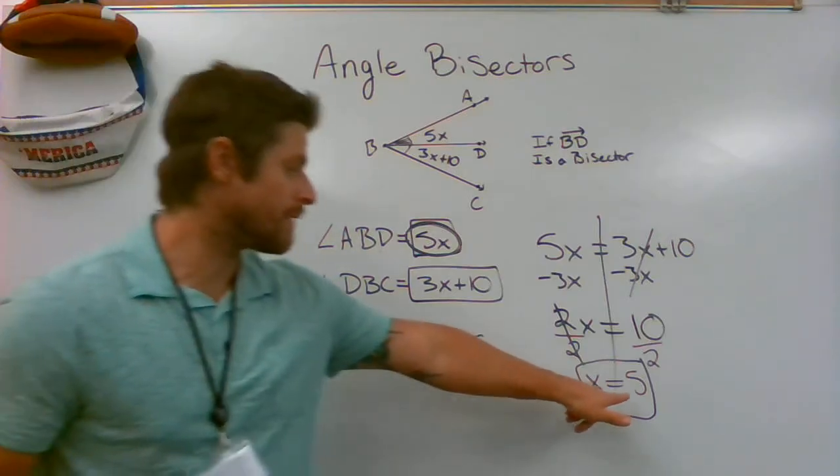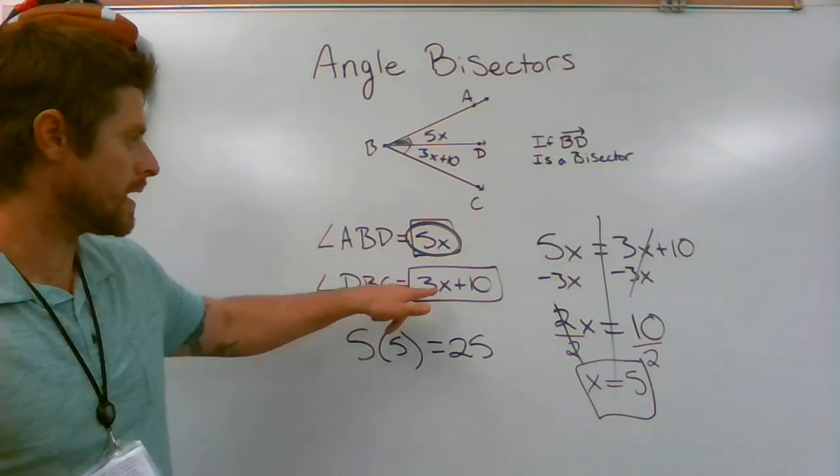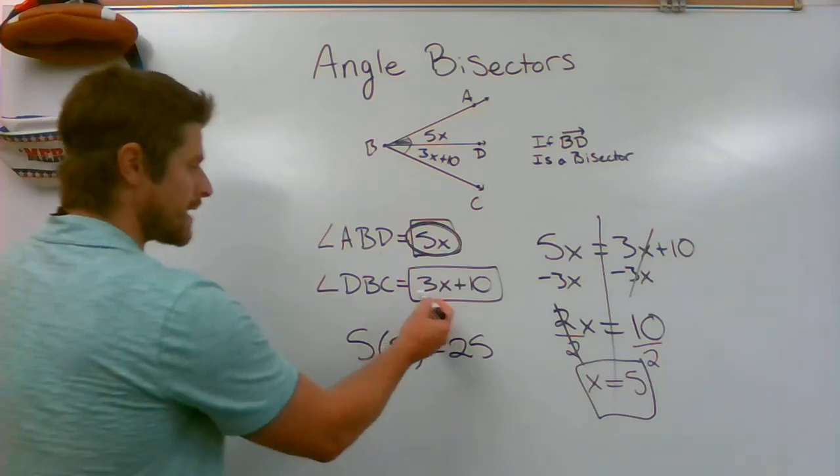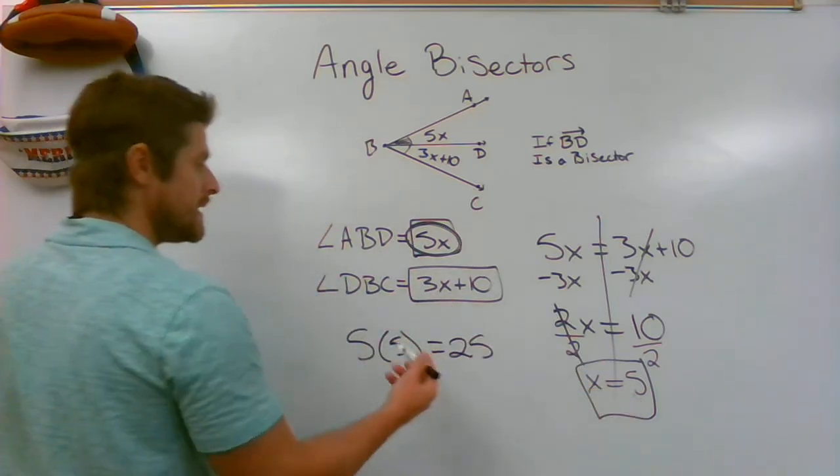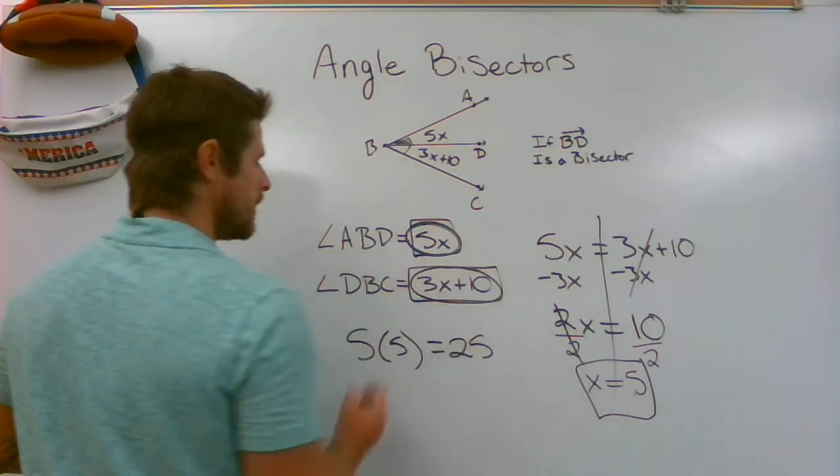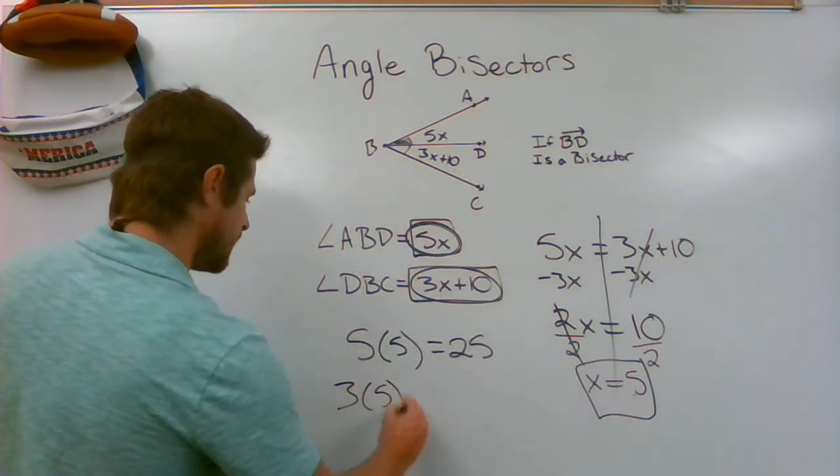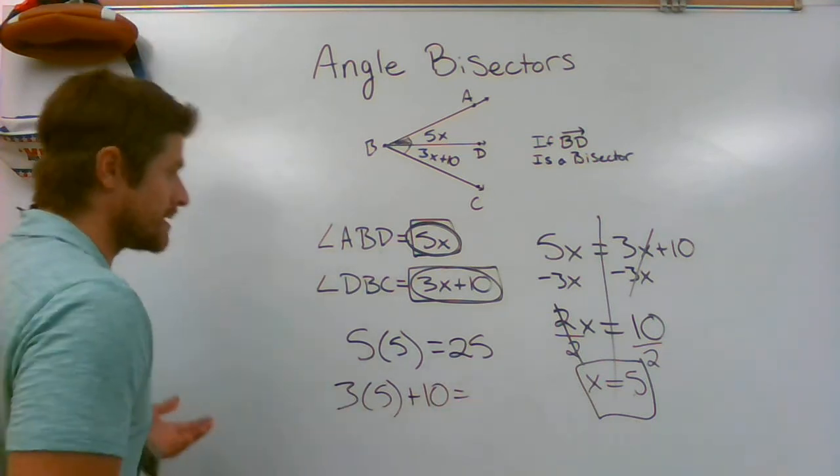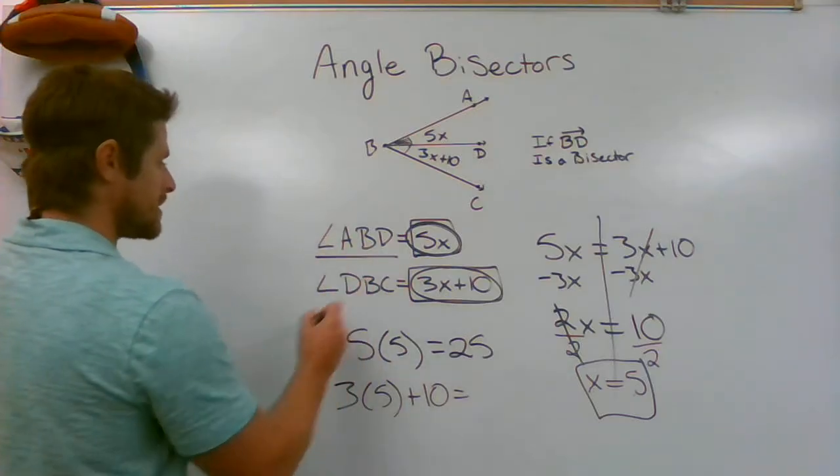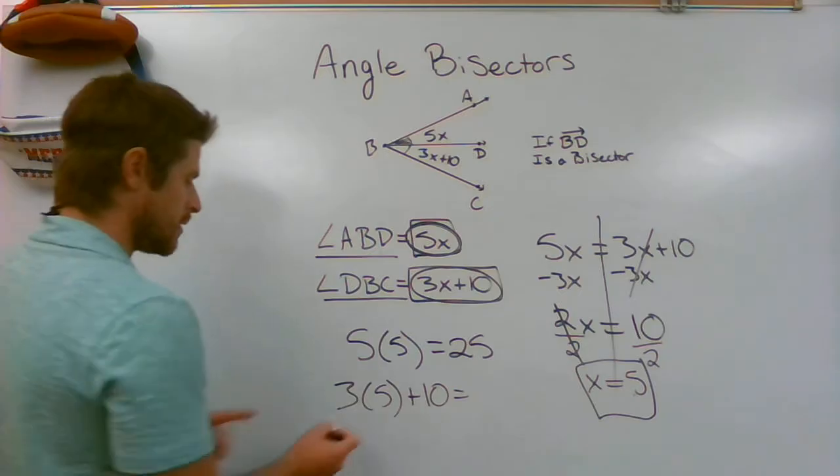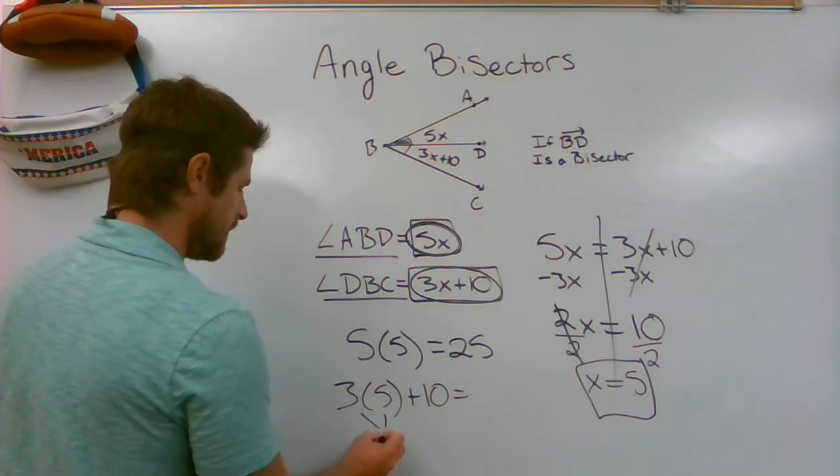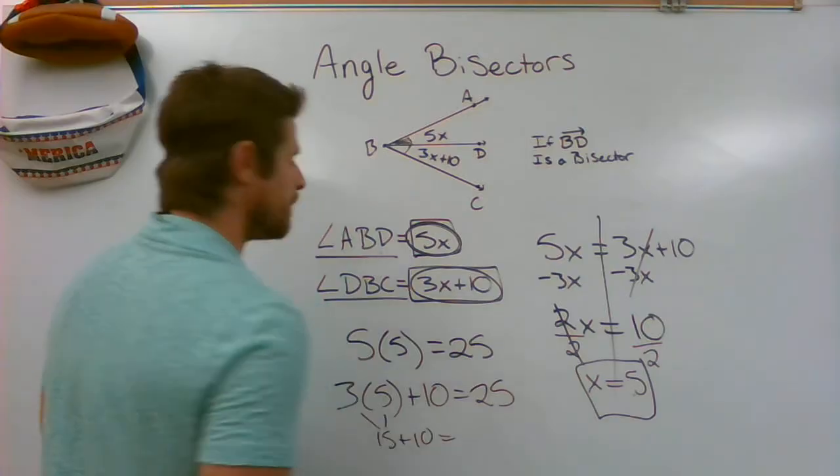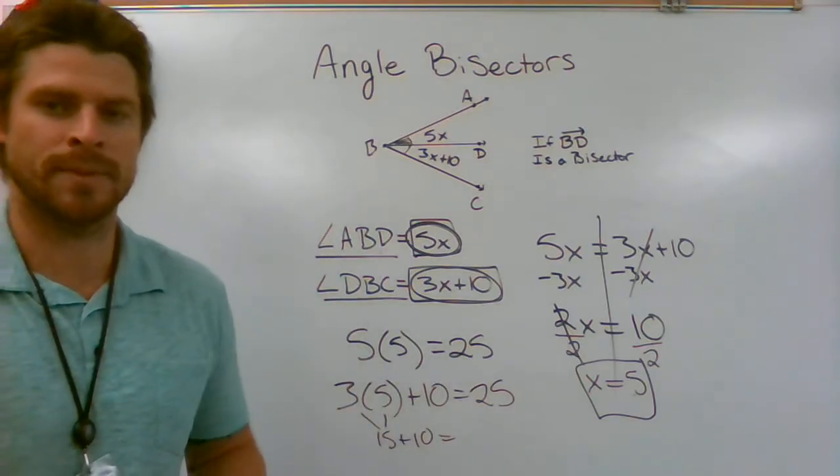Now, you can put that 5 right here as well and see what you get. 3x or 3 times 5, you're going to get 15 plus 10 more. And that would give you 3 times 5 plus 10. And we would hope that we get the same exact result because if it's a bisector, this angle has to be the same as this angle. So, 3 times 5 is 15 plus 10 equals, what do you know? Both of the angles in this case would be 25 degrees.